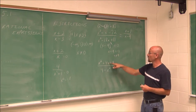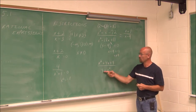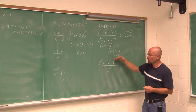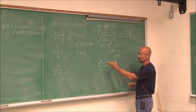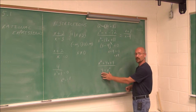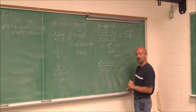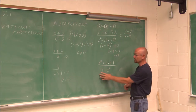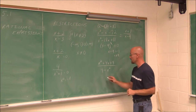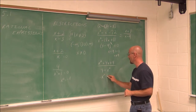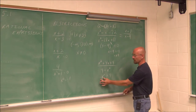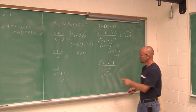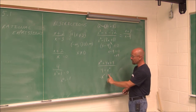Here we have x squared plus 4x plus 4 divided by 4 minus x squared. The top is already in descending order. For the bottom, we rewrite in descending order as negative x squared plus 4 to avoid sign errors.